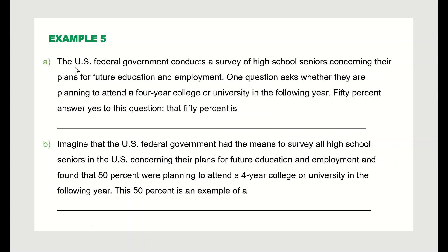Example five: the U.S. federal government surveys high school seniors about plans for future education and employment. One question asks whether they plan to attend a four-year college or university — 50 percent answered yes. That 50 percent is based on the sample of students surveyed, so it is related to the sample, meaning it is a statistic.